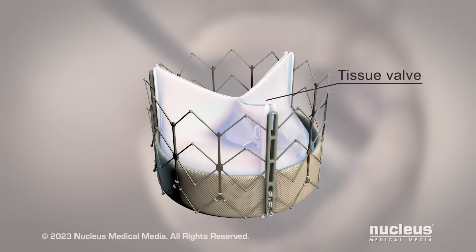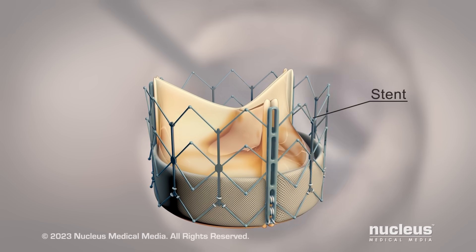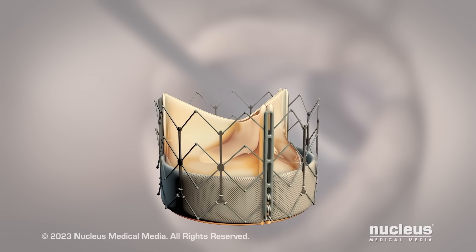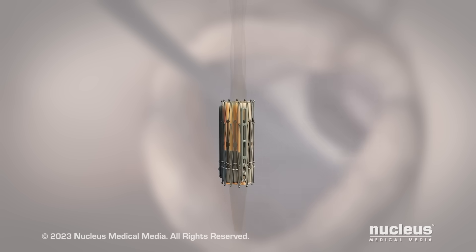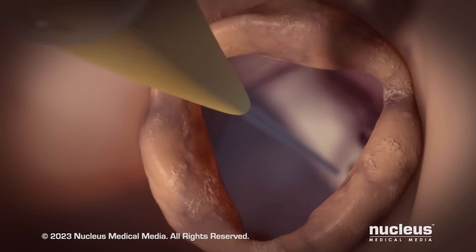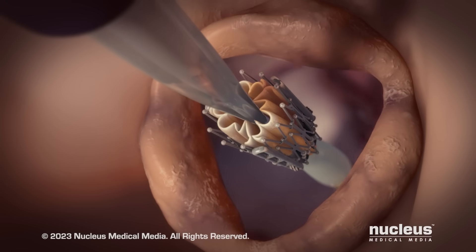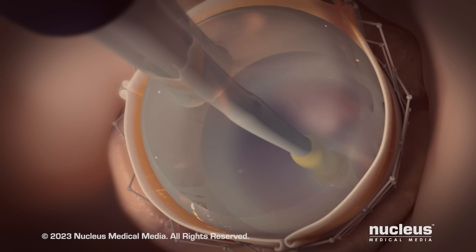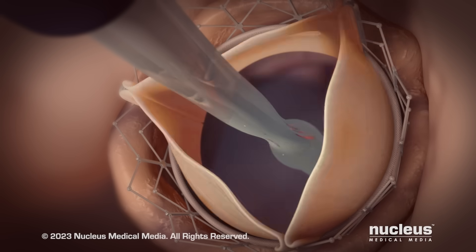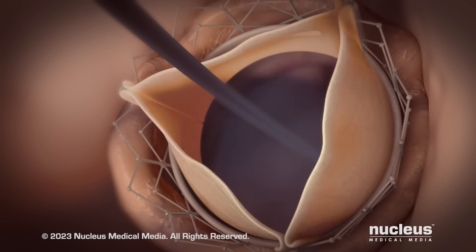The replacement valve consists of a tissue valve surrounded by a wire mesh called a stent. The replacement valve will be compressed and placed on the tip of another catheter. This catheter will be inserted through your aortic valve. When the catheter reaches the opening in your aortic valve, your doctor will inflate a balloon underneath the replacement valve to expand it and the stent. After placement of the new aortic valve, your doctor will deflate the balloon. The stent will support and secure the replacement valve in place. The catheter and guide wire will be removed.